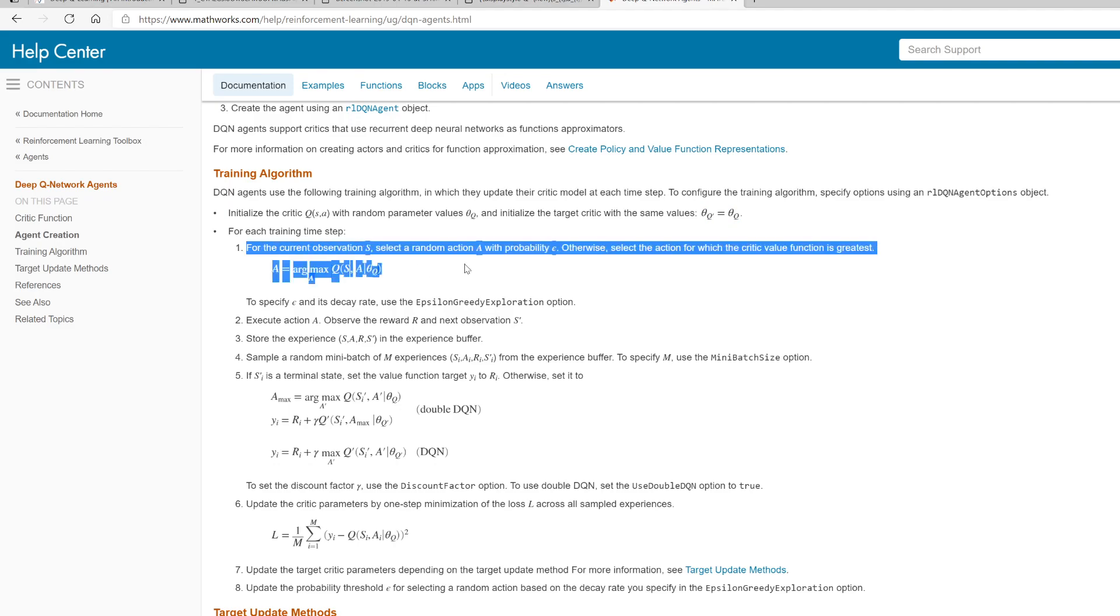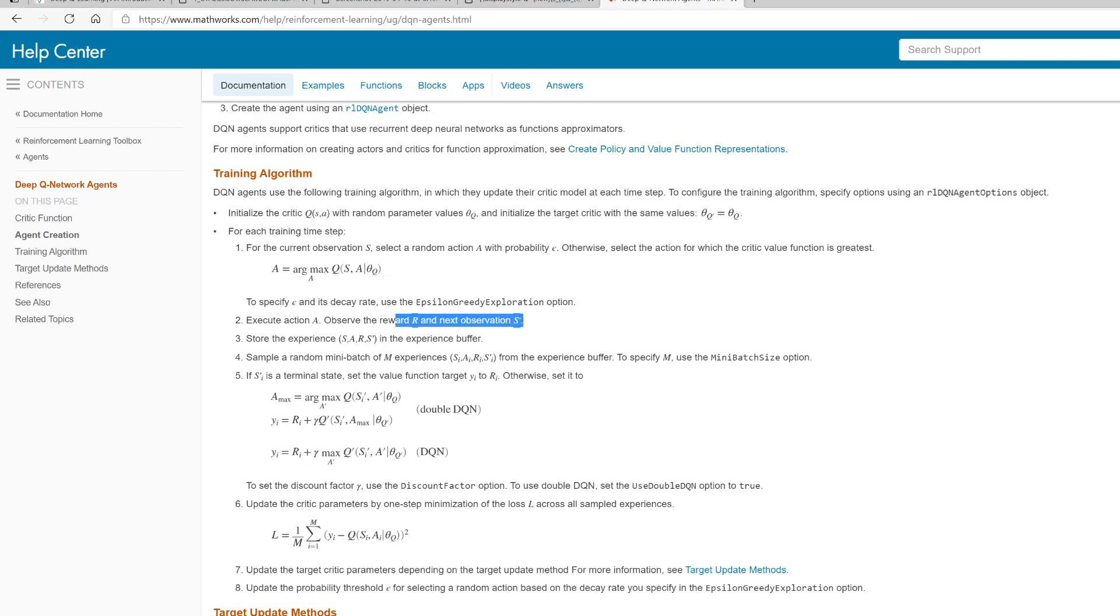You first have a critic network, which is your Q network, and then you have a target network as well. You start such that both networks have the same weights - they're clones of each other. Depending on the exploration, which we talked about last time, you take an action. The action is basically whatever action gives you the largest Q value. Initially it will be random because your network is untrained and also you are performing exploration as well. You execute the action, whatever action that you executed, and you would get a reward and the next state, S prime. You store this tuple - state, action, reward, the next state - in this buffer. Then you sample a random mini-batch from these experiences. Just pick out, say, 32 from this experience buffer.